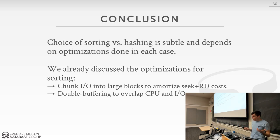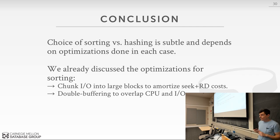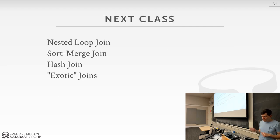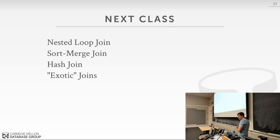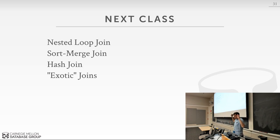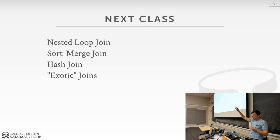Any questions about sorting or aggregations? Next class we'll be focusing on joins — we'll start with basic nested loop joins, then get more complicated. We'll also have time to talk about what I'll call exotic joins: lateral joins, anti-joins, and semi-joins. We'll get through the basic join algorithms and see how much time we have at the end for the more fancy things.